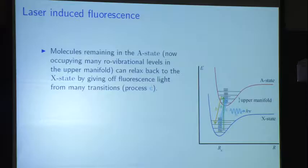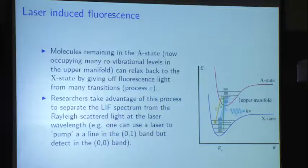If you look at that picture, you can have lots of transitions, so there's not just one emission line from the A state — there are actually a lot of emission lines, even though you pumped just one line. You can separate the LIF spectrum from Rayleigh scattering. You don't want to stare at the laser wavelength — the laser can scatter off surfaces, it'll Rayleigh scatter. You can put a bandpass filter in front of the camera and look at a different band. A popular approach is to pump a line in the 0-1 vibrational band and detect in a completely different vibrational band, thanks to energy transfer in the excited state. That's a good way to get rid of noise.